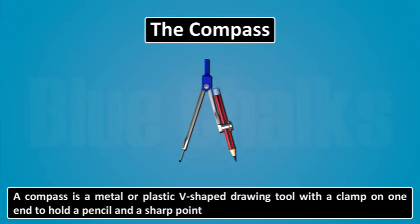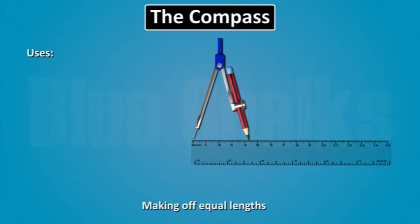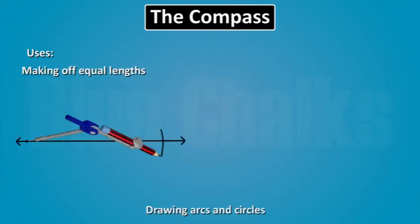And a sharp point on the other end. A compass is used for making arcs of equal lengths, drawing arcs and circles.